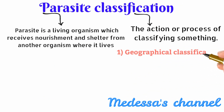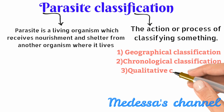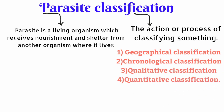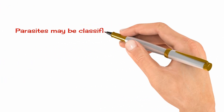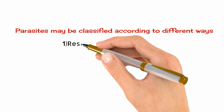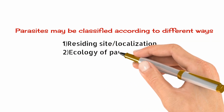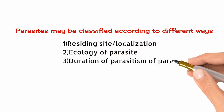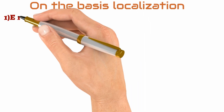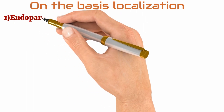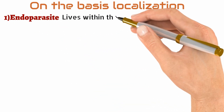There are four types of classification: geographical, chronological, quantitative, and qualitative. Parasites may be classified according to different ways: on the basis of residing site, ecologically, duration of parasitism, and generation of parasites.